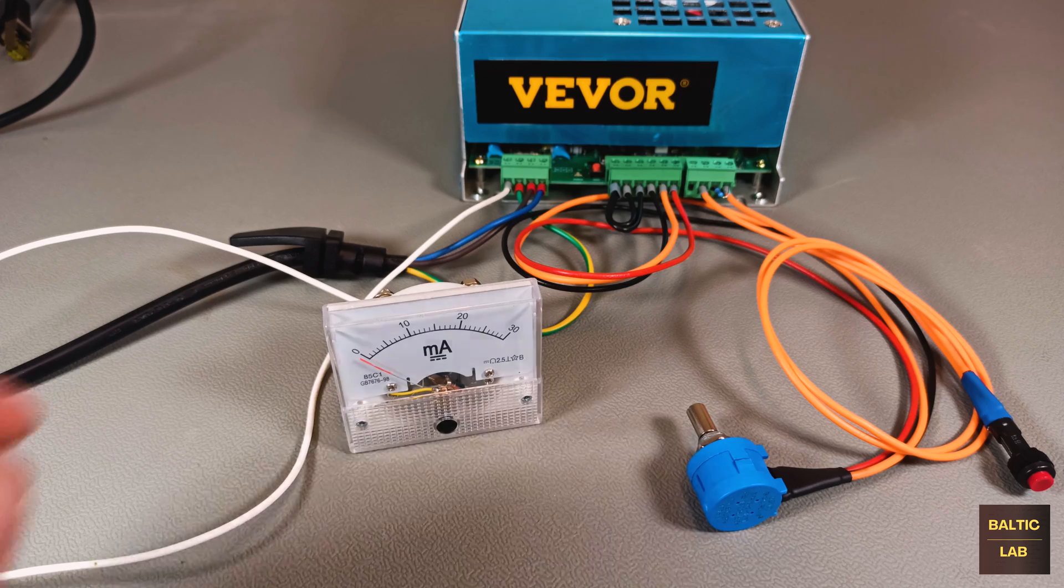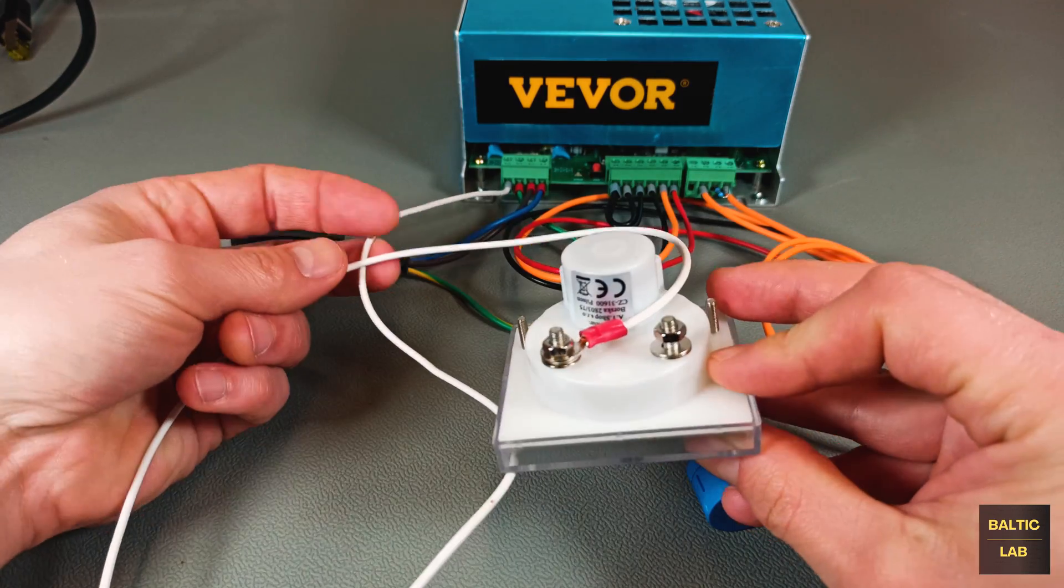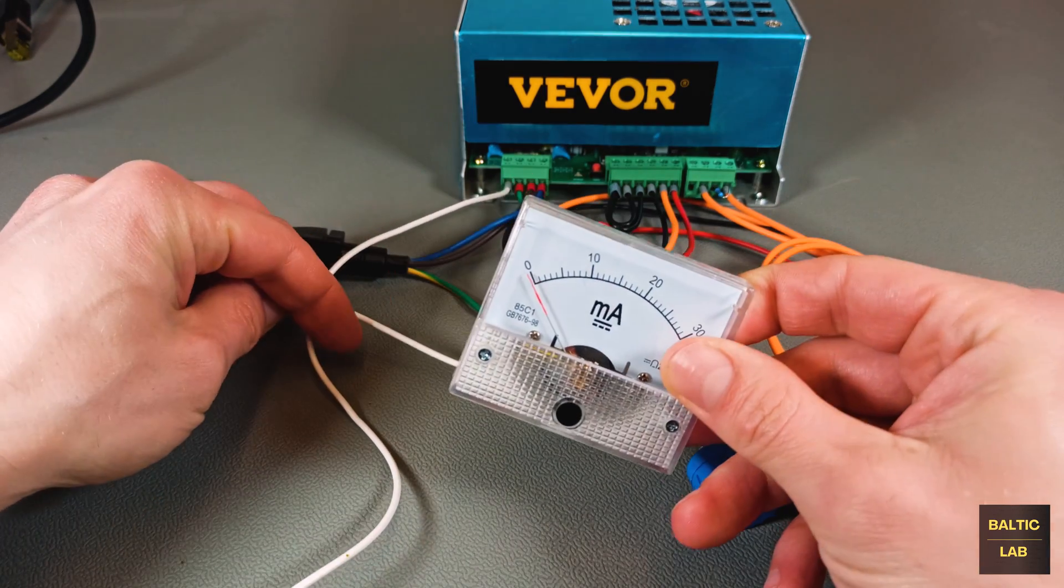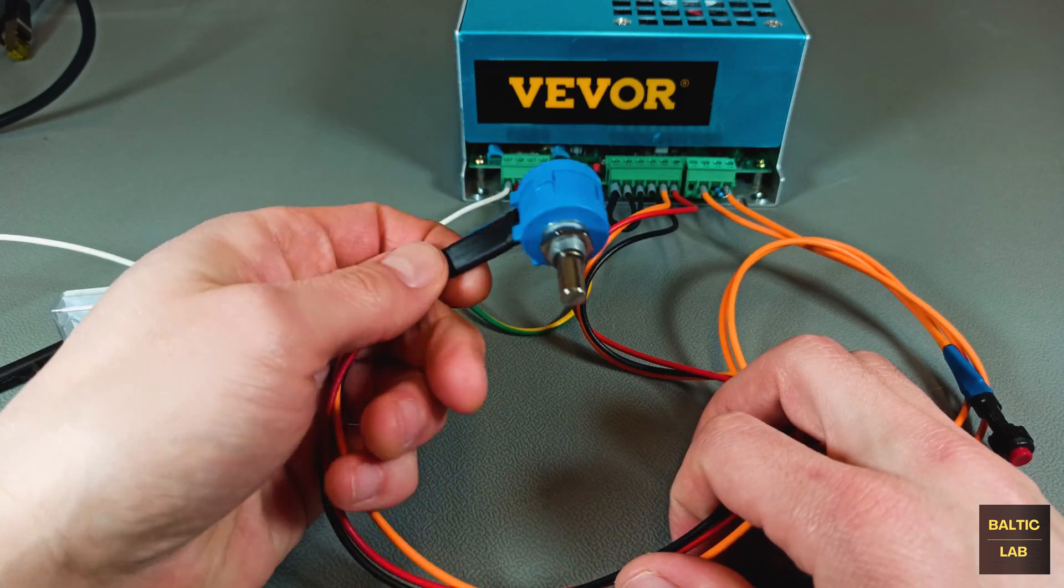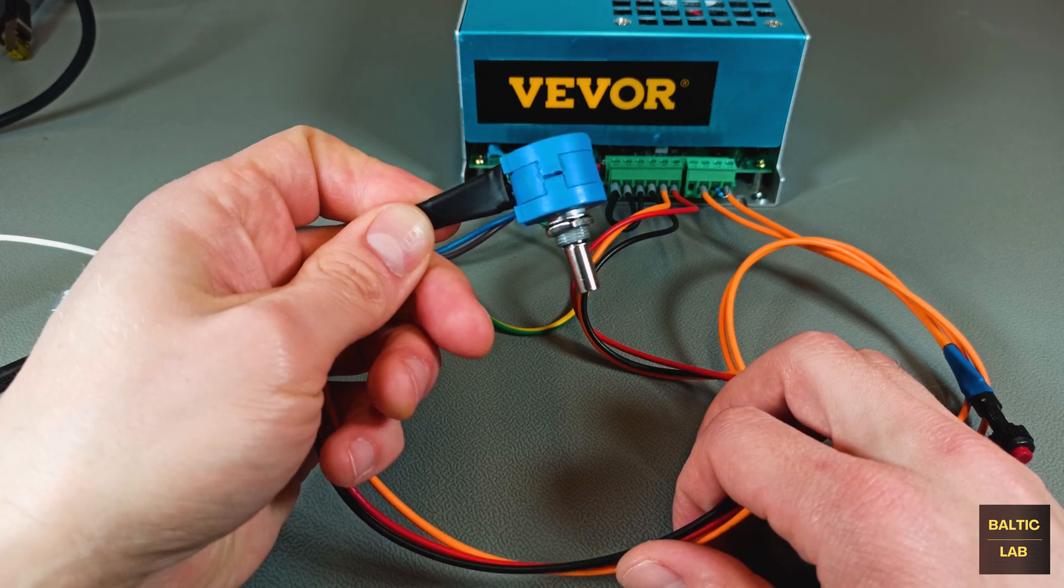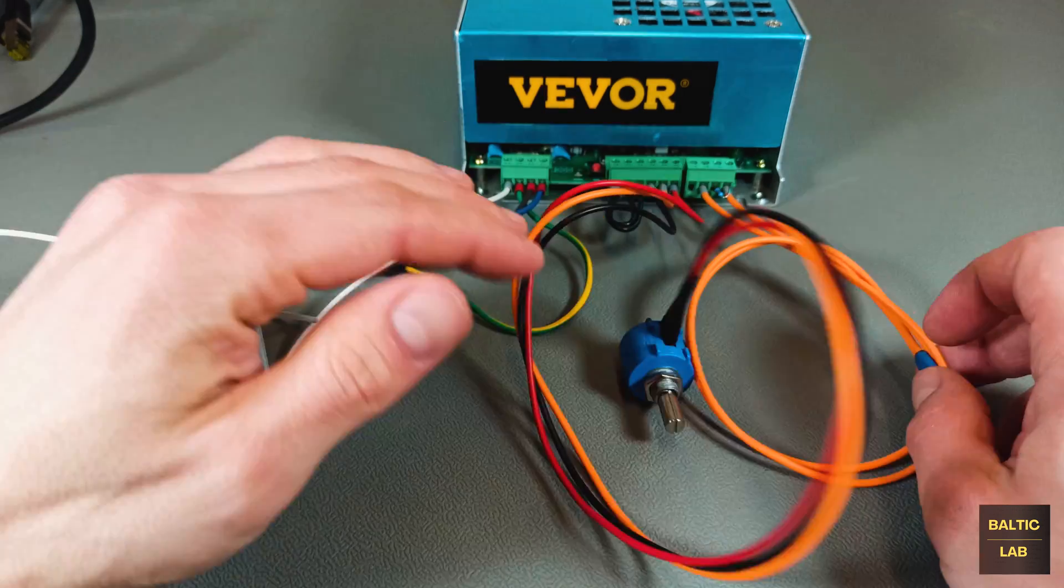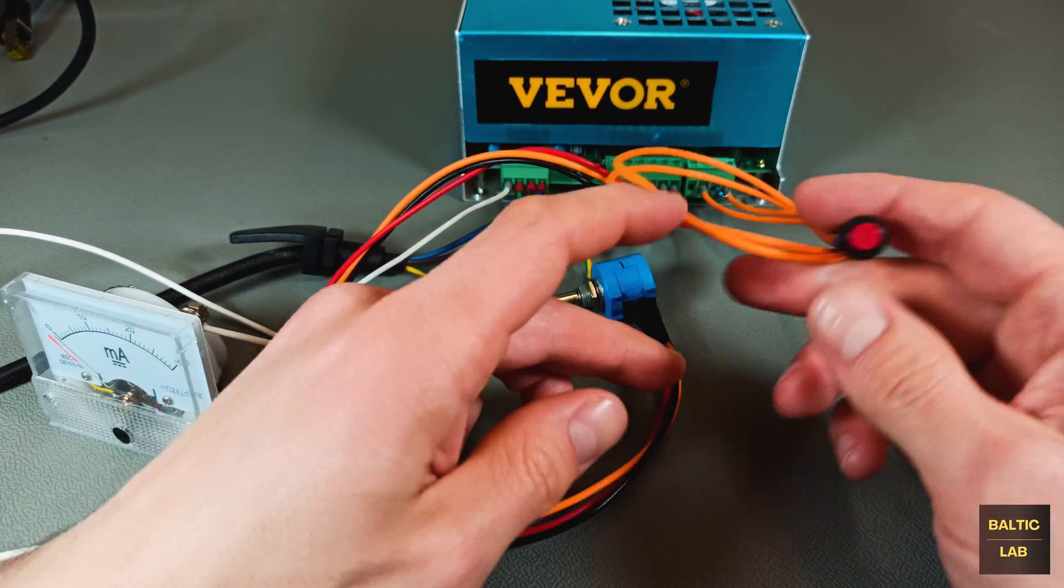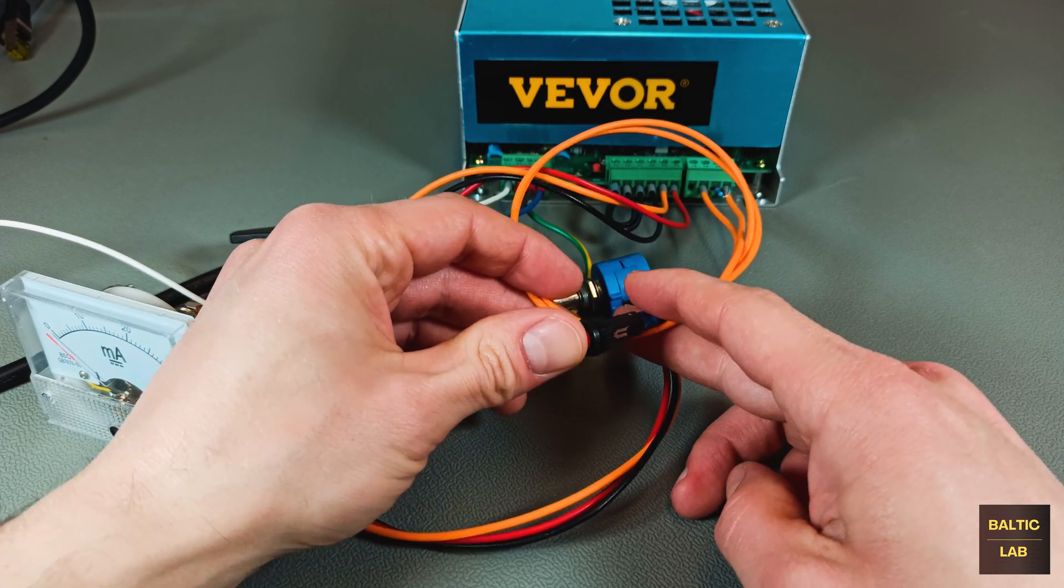Just to recap from another perspective this current meter will be connected to the cathode side of the CO2 laser tube, the potentiometer will be used to set the maximum output power of the laser tube and the momentary switch will fire the laser.